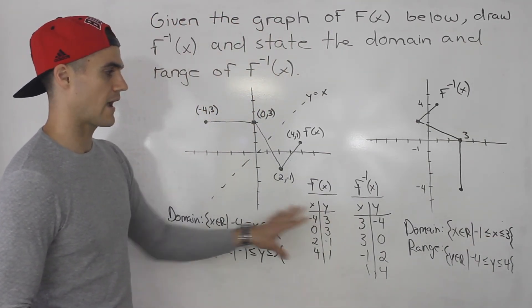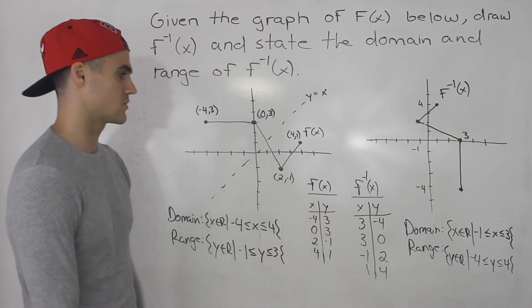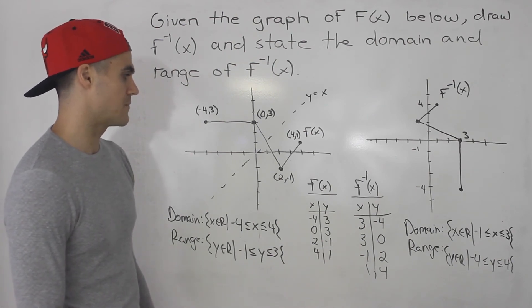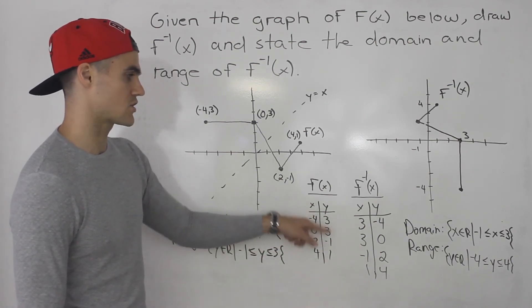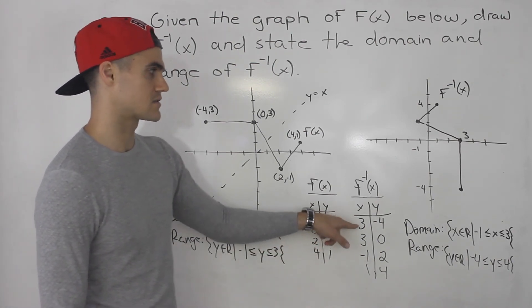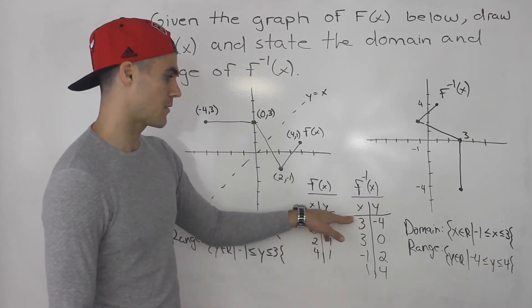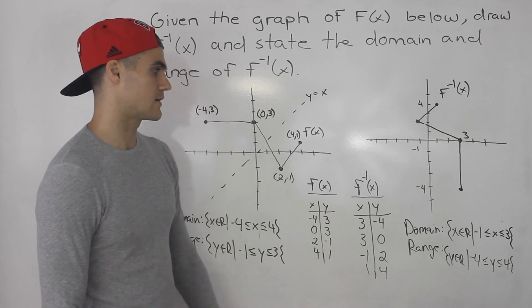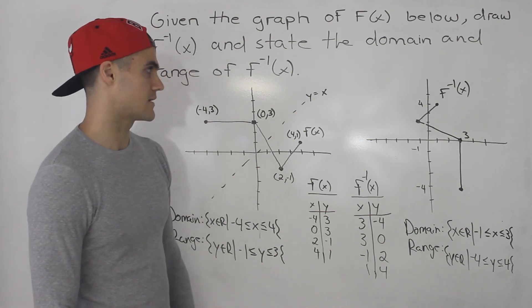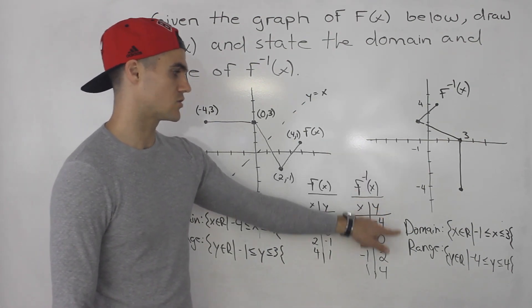It's always going to have that sort of relationship — everything is just going to be inverse. That makes sense because the inverse is just all the coordinates flipped, and then you plot them. Remember, it's got to be in the right order. And that's it — that's the sketch of the inverse and the domain and range for it.